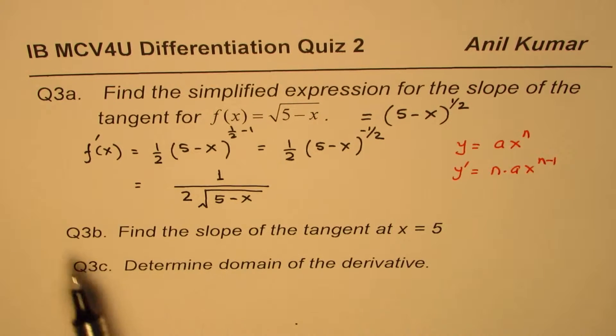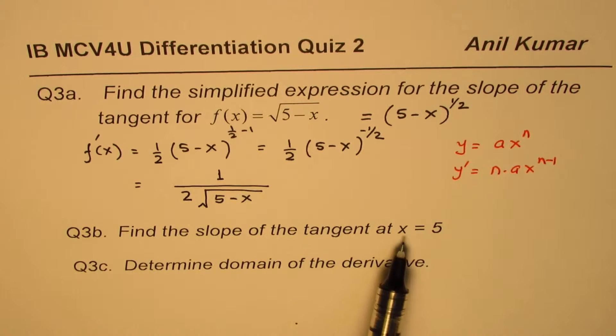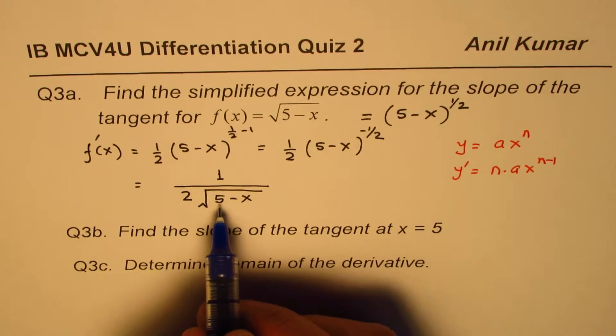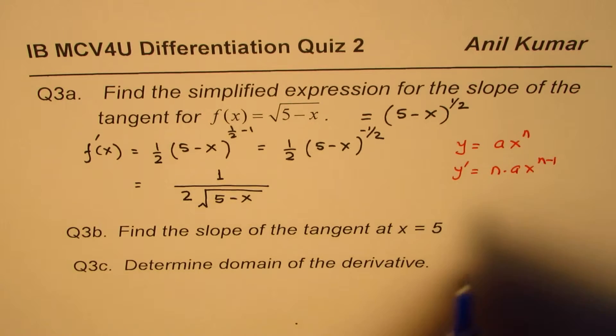Now the question is part B: find the slope of tangent at x equals 5. Now at x equals 5, you can see that if I put x as 5, we get something over 0. So we get something over 0, and therefore the tangent for this does not exist.